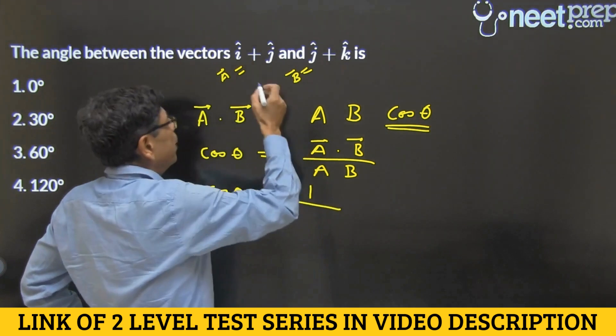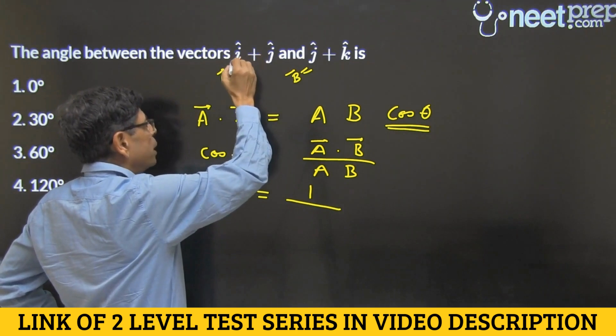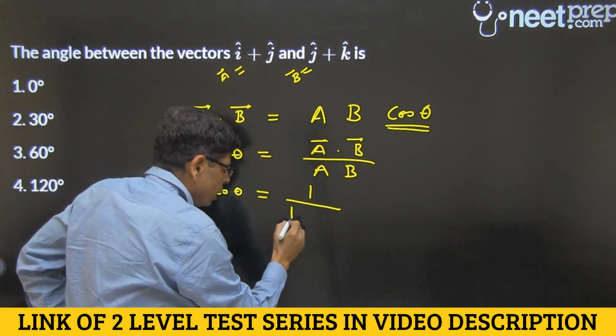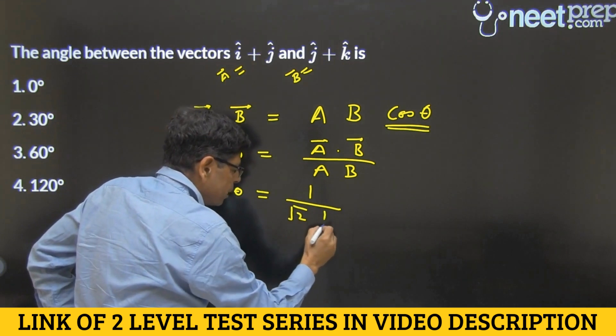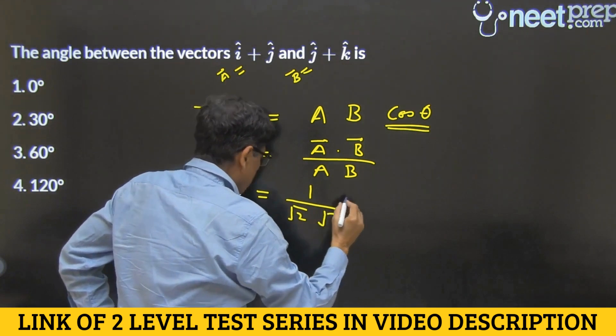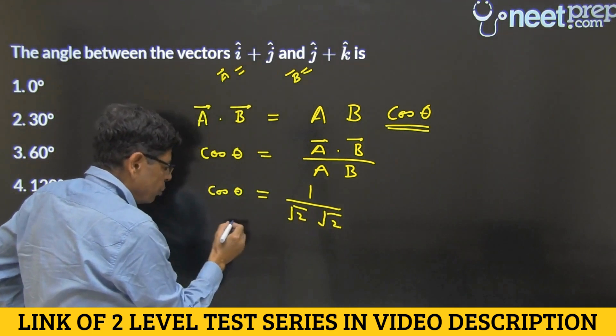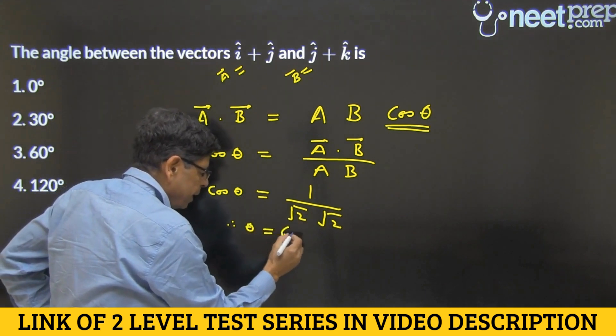Divided by magnitude of vector A, now magnitude of this is one square plus one square under root, that's root two, and as much as the magnitude of the other vector. So, cos theta is half and therefore theta is 60 degrees.